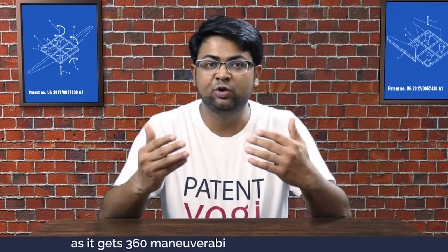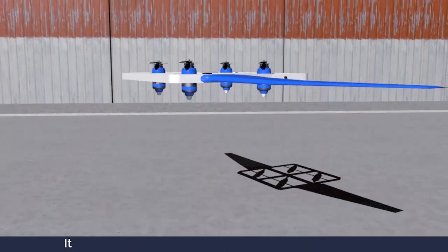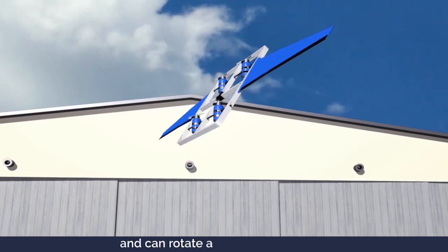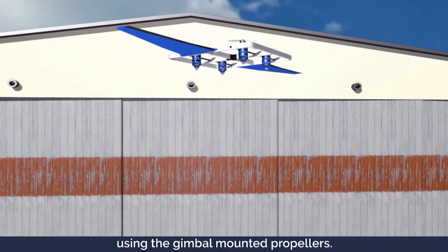This provides a major advantage to this aircraft as it gets 360 degree maneuverability about any spatial axis. It can assume a hovering state just like a hummingbird and can rotate about any spatial axis using the gimbal mounted propellers.